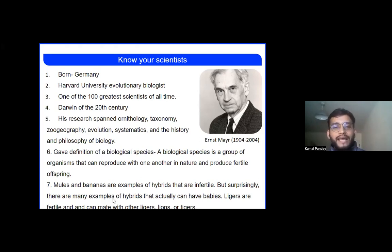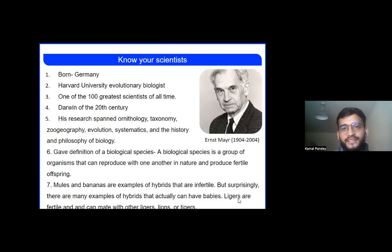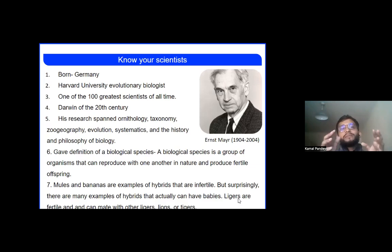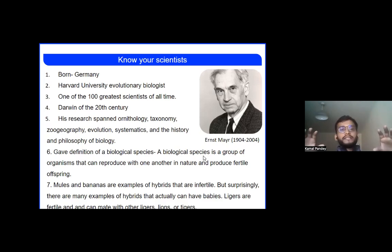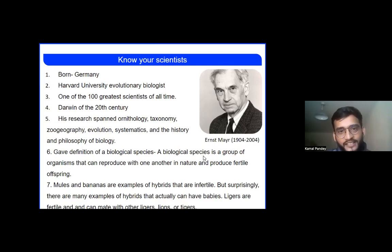Surprisingly, there are many examples of hybrids that can actually have babies. For example, ligers — a lion is one species and a tiger is another species, two different species, but they are able to produce a fertile offspring. So a liger is formed from a combination of lion and tiger, both different species, yet they can reproduce and produce fertile offspring. This shows the definition has exceptions, though the definition Ernest Mayr gave is broadly accepted.